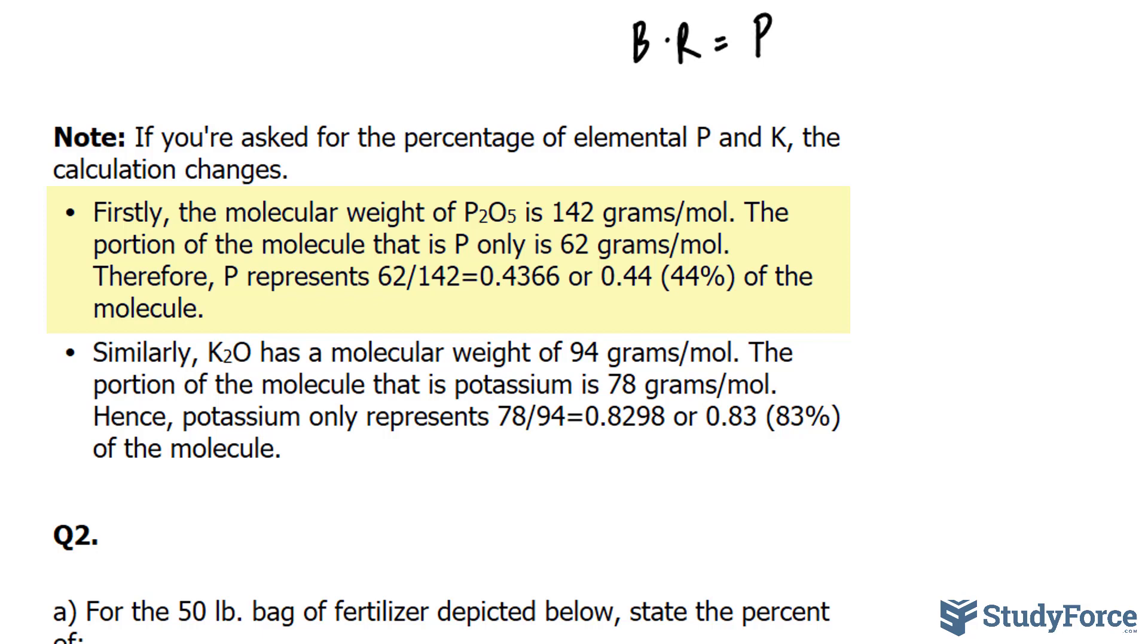The portion of this molecule that is P only is 62 grams per mole. That means phosphorus only represents 44% of this molecule.